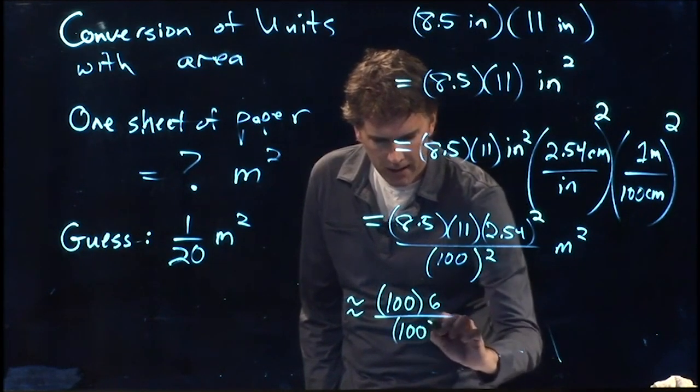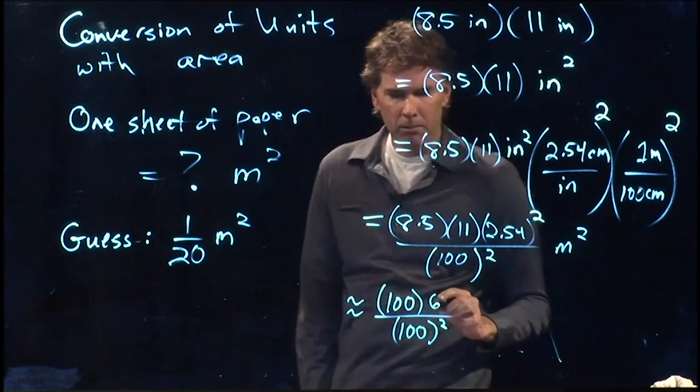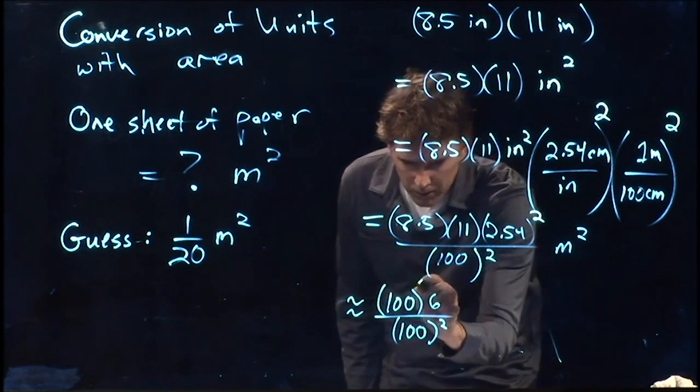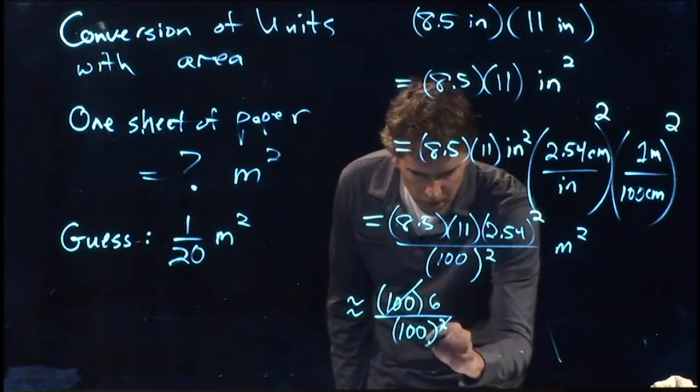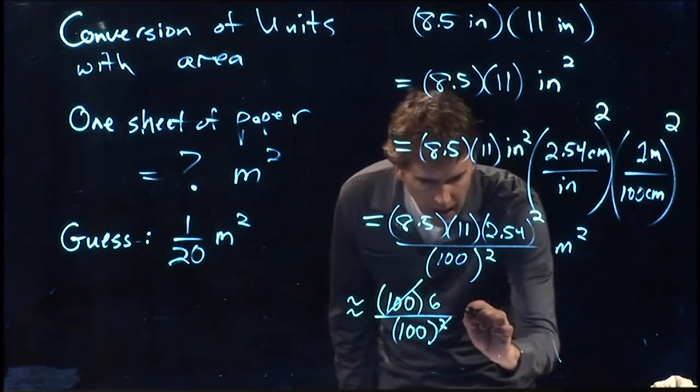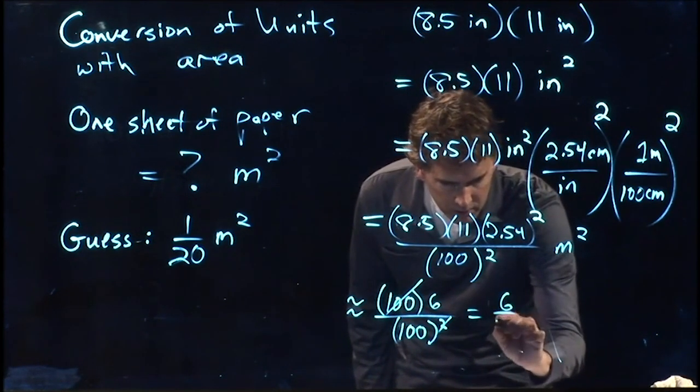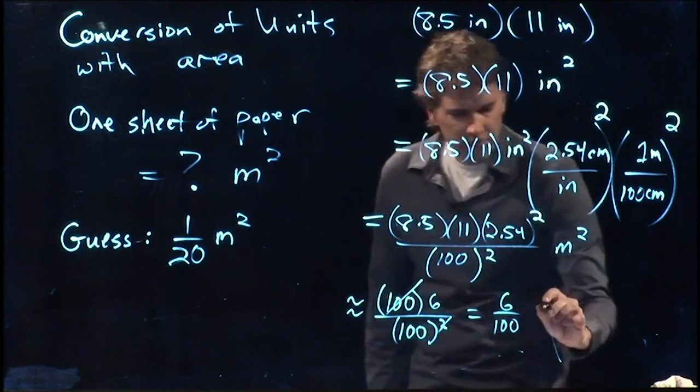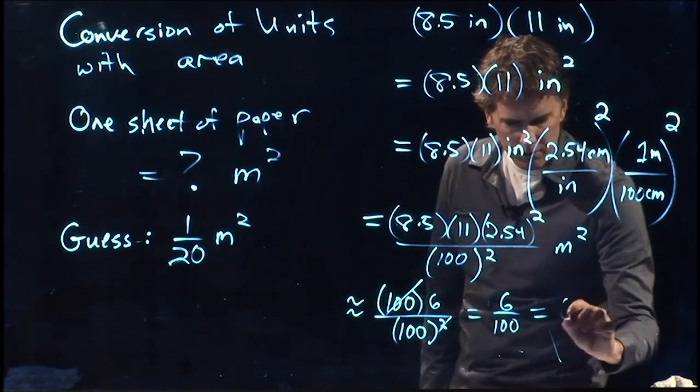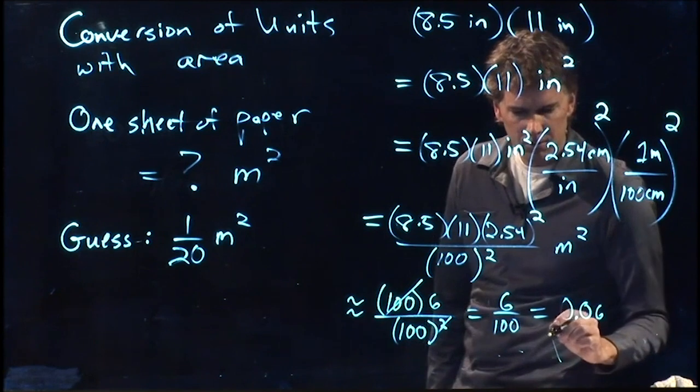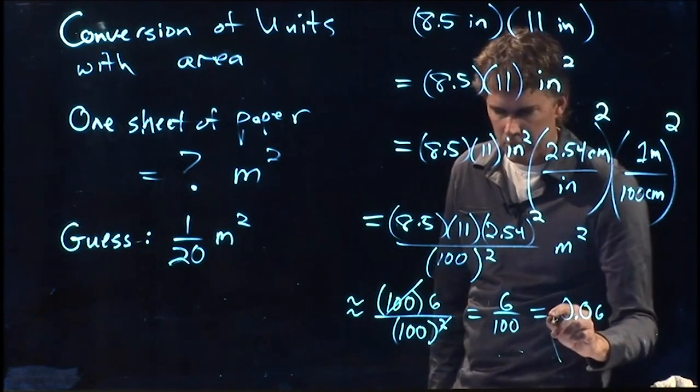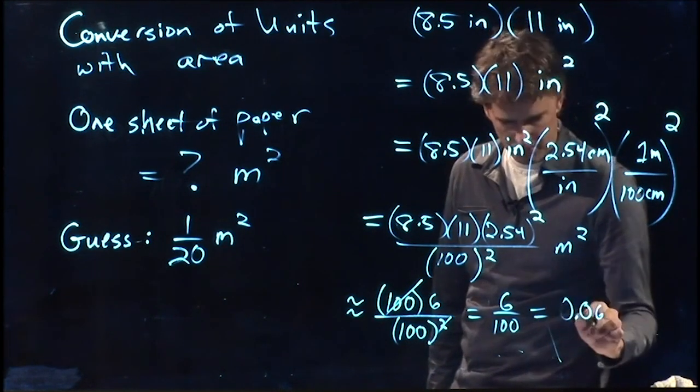So we will just leave that as 100 squared. Because look what happens. One of those 100s up there cancels with one of the 100s down there. I get 6 over 100. 6 over 100 is 0.06. What did you guys get for your calculator? Same thing?